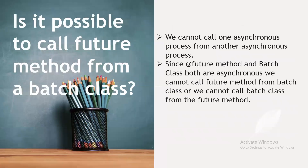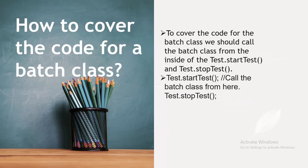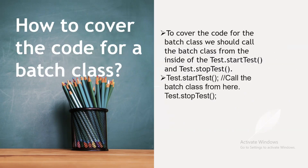Is it possible to call a future method from a batch class? No, we cannot call one asynchronous process from another asynchronous process. Since both future methods and batch classes are asynchronous, we cannot call a future method from a batch class, or a batch class from a future method. To cover the code for batch classes, we should call the batch class from inside Test.startTest() and Test.stopTest(). Call the batch class between those two method calls to get code coverage for batch classes at the test class level.